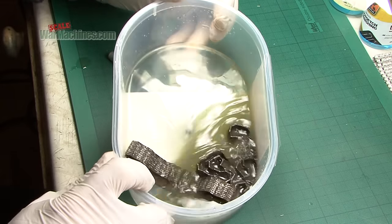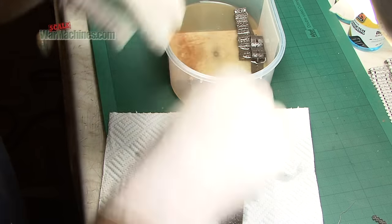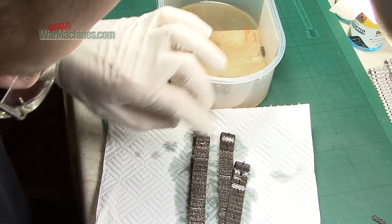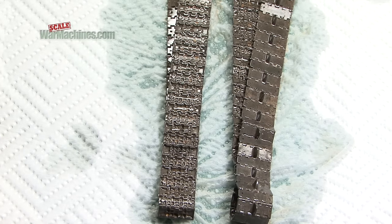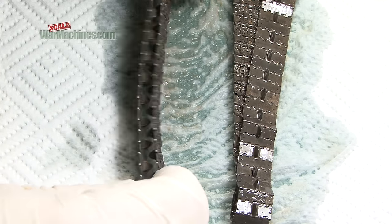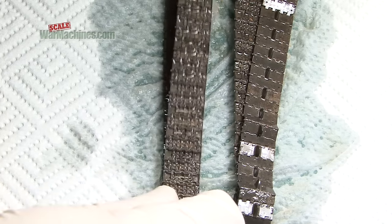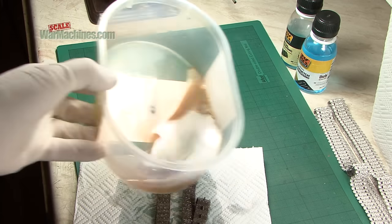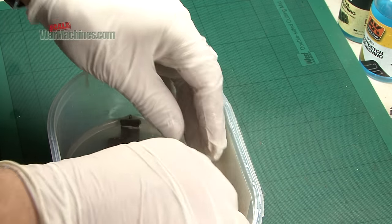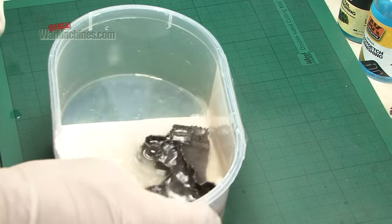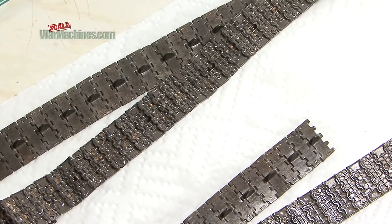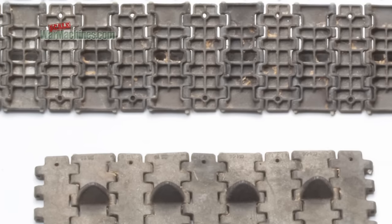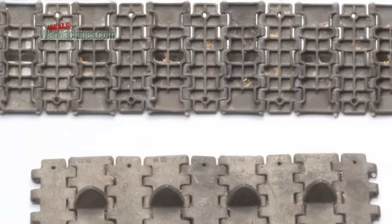When you're happy, take some paper towel and leave to dry. Then dispose of the remaining fluid and rinse the tracks with water, being careful to remove all traces of the AK product. Set them aside to dry again. And there you have it. A super realistic finish that's a lot more convincing and easier than painting.